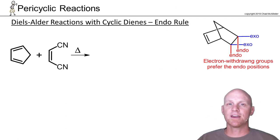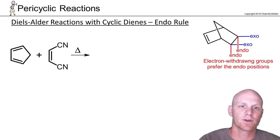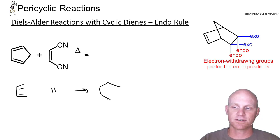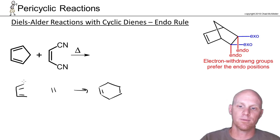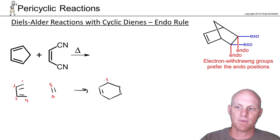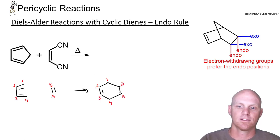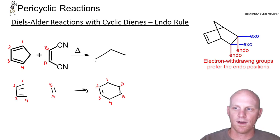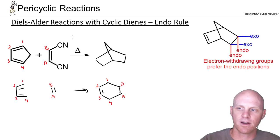Let's take a look at the next example and keep the endo rule in mind. I like to compare any complex Diels-Alder reaction to my most basic one and keep it off to the side. I number the diene 1, 2, 3, 4 and the dienophile A and B, which matches up with 1, 2, 3, 4, A, and B in the product. Since it's going to be bicyclic, I'll draw it in that form accordingly.